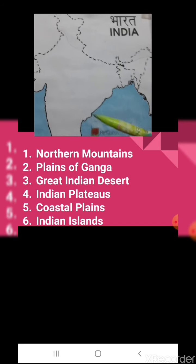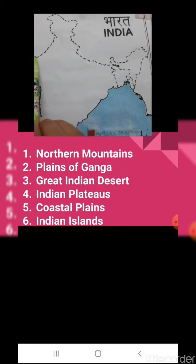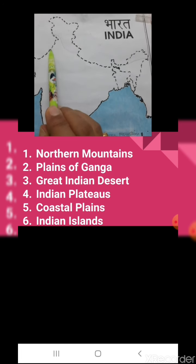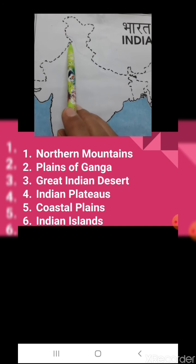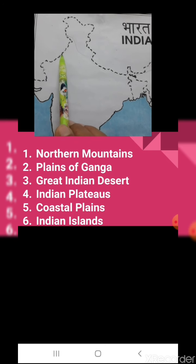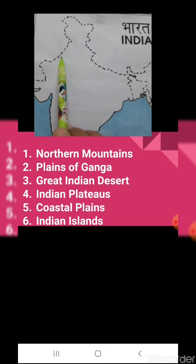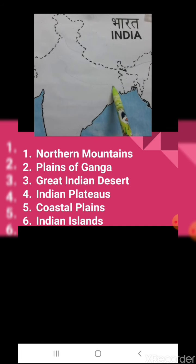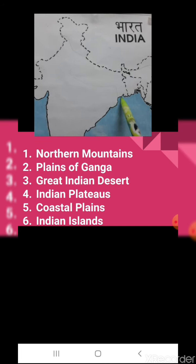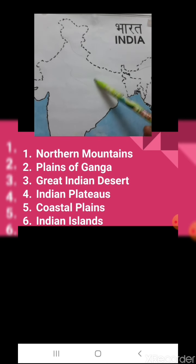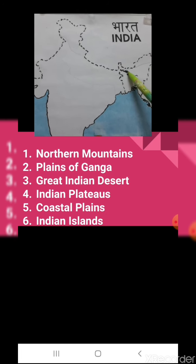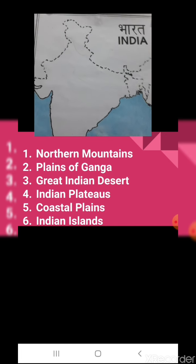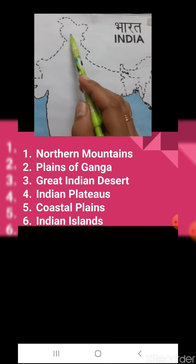Now we have northern plains. This portion — we will draw a rough line. This is the plain area, northern plains. Two things are clear: northern mountains and northern plains.